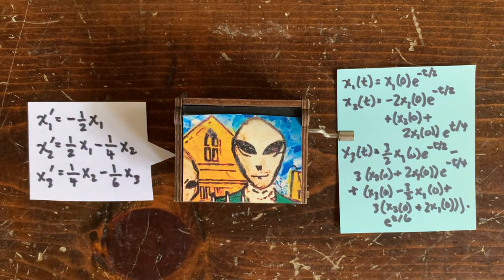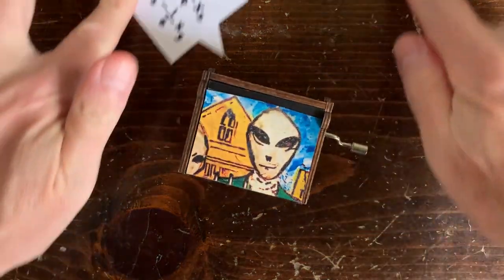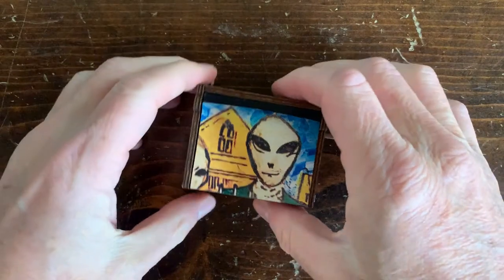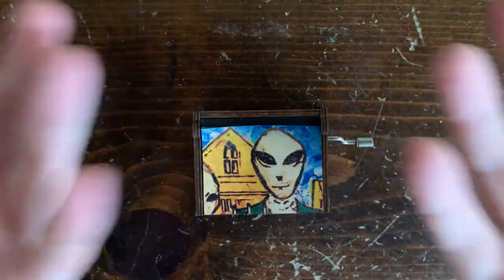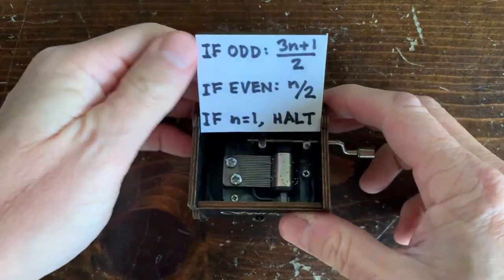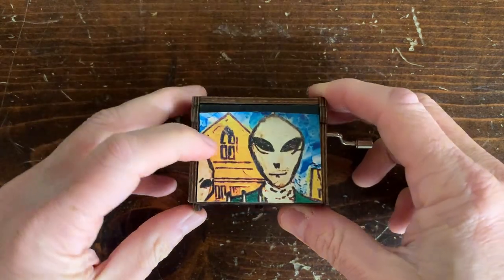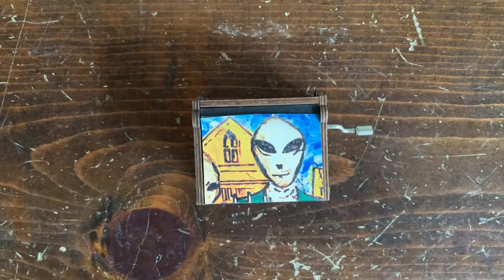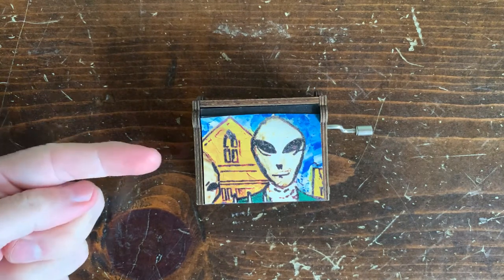But when the aliens leave Earth, they accidentally take the programming manual with them. So you look at the circuitry and it's pretty simple, so the trick must be in how the aliens programmed it. Since you don't have the manual, you figure: let's stick in some random programs and see what they do.